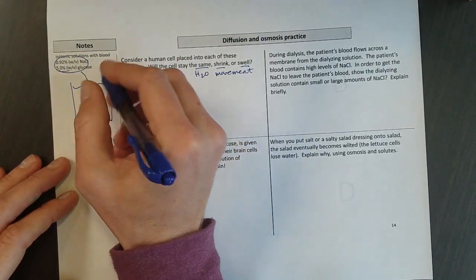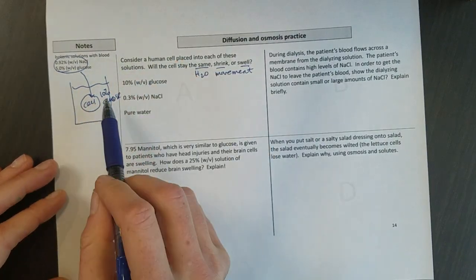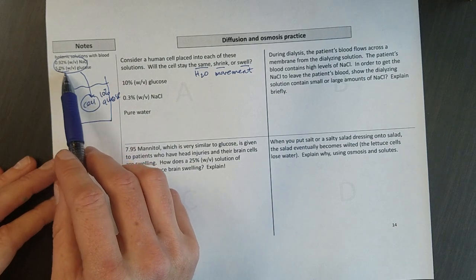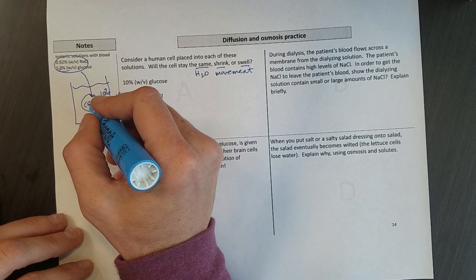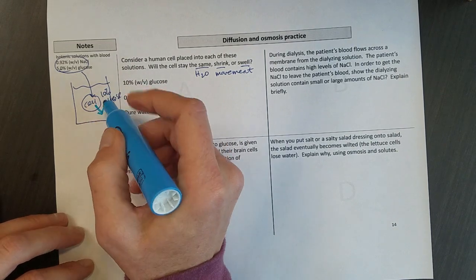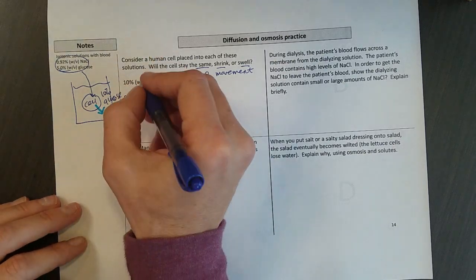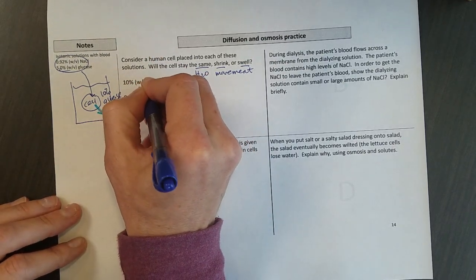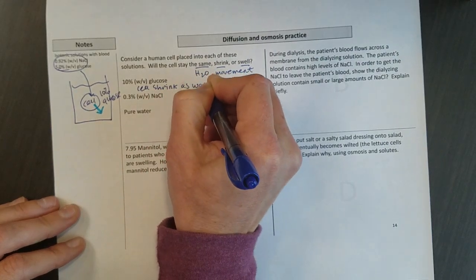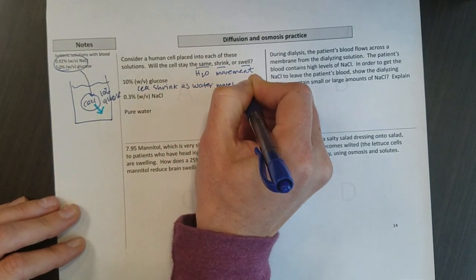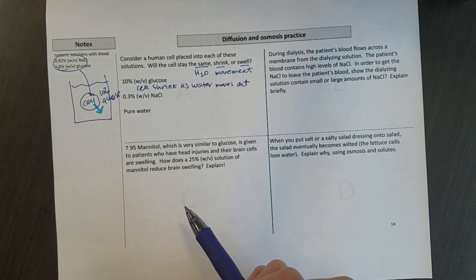And then I set that cell in a 10% glucose solution. I've got 10% glucose outside and only 5% glucose inside. My solvent is always going to move to try and dilute that higher concentration. And so here I would say that the cell will shrink as water moves out. So you might want to revisit the sketches from the last page.